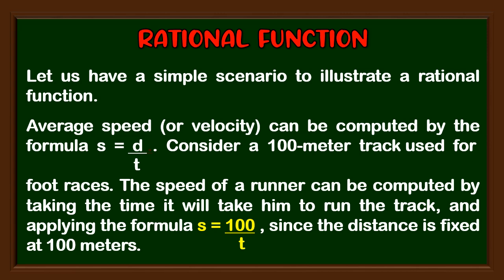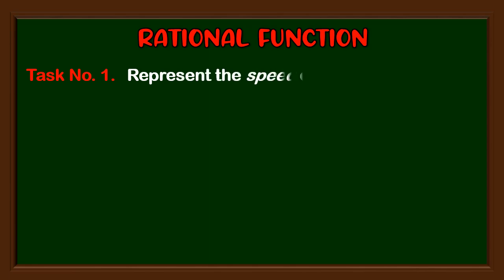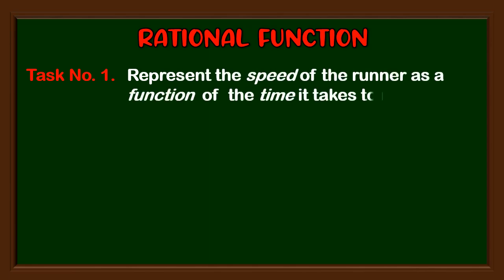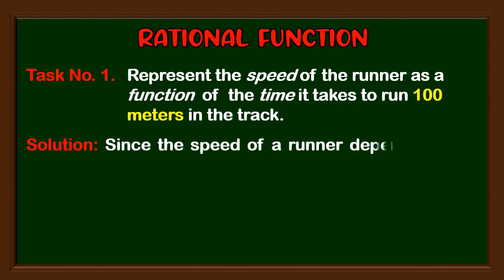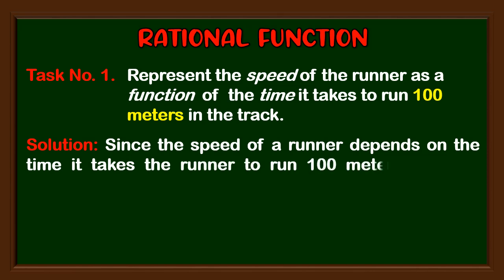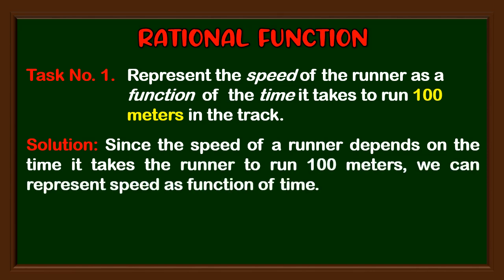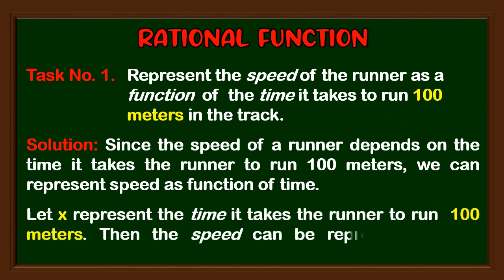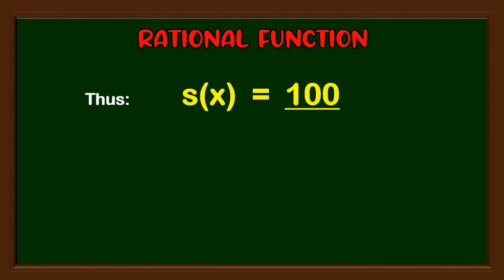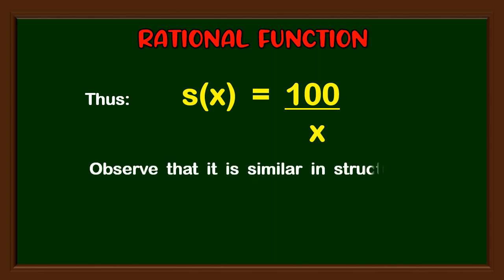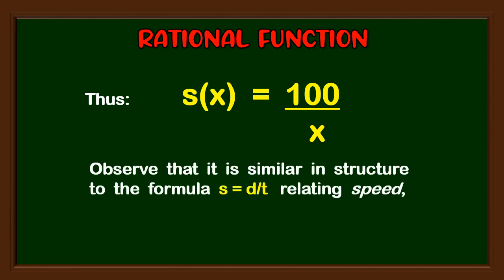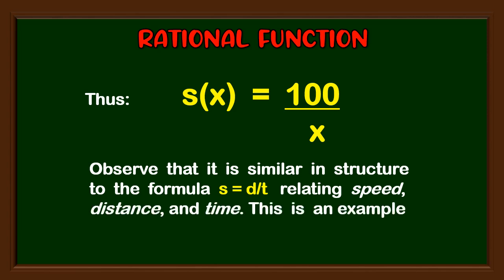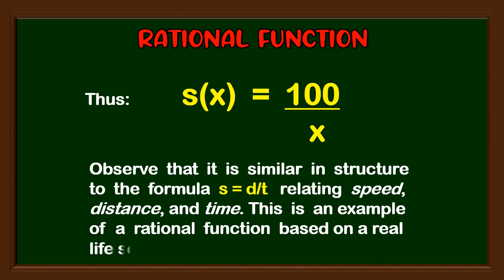Task number one: represent the speed of the runner as a function of the time it takes to run 100 meters in the track. For the solution, since the speed of a runner depends on the time it takes to run 100 meters, we can represent speed as a function of time. Let x represent the time it takes the runner to run 100 meters. Then the speed can be represented as a function s(x), thus s(x) = 100 / x. This is an example of a rational function based on a real-life scenario.